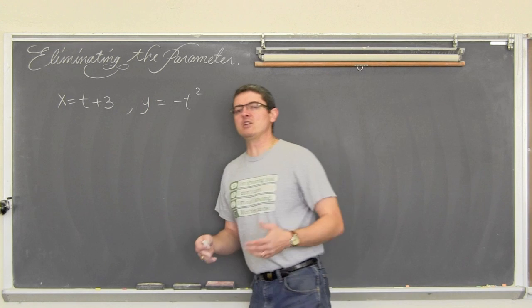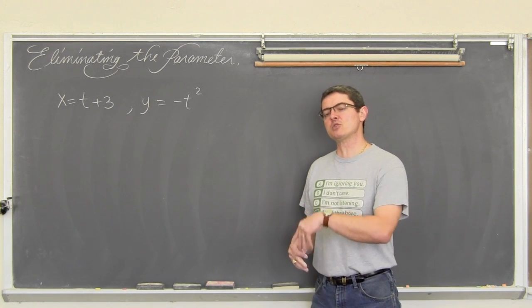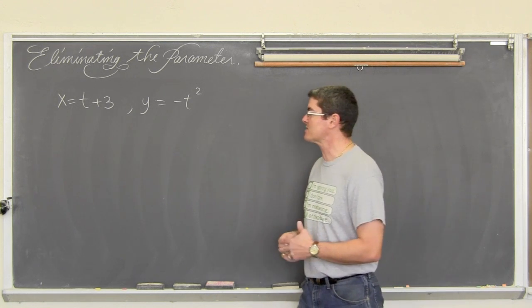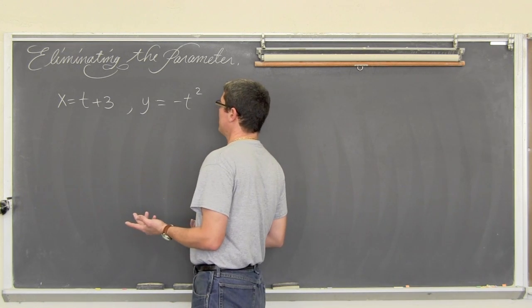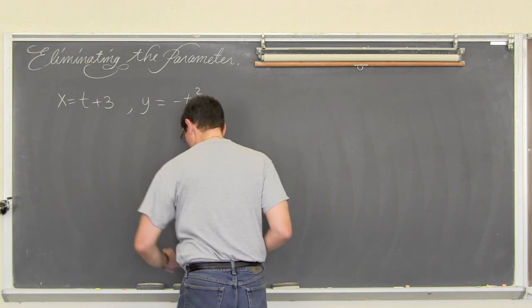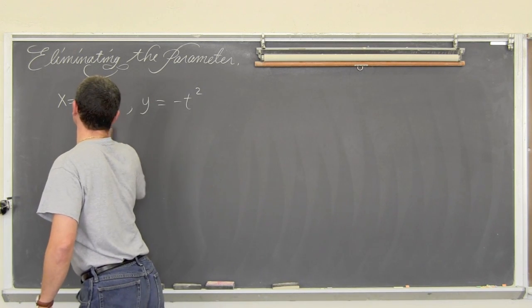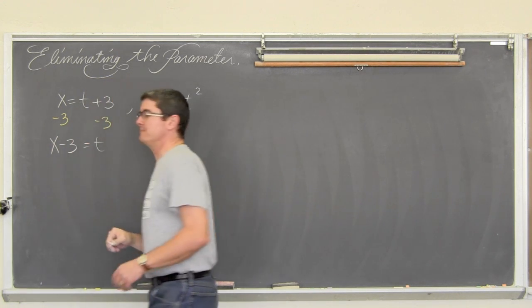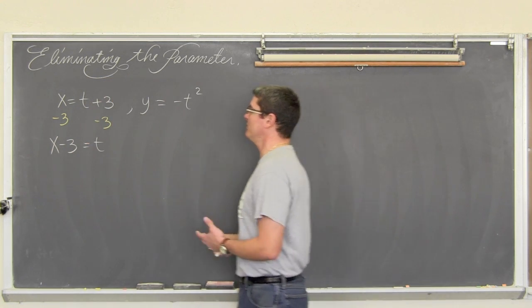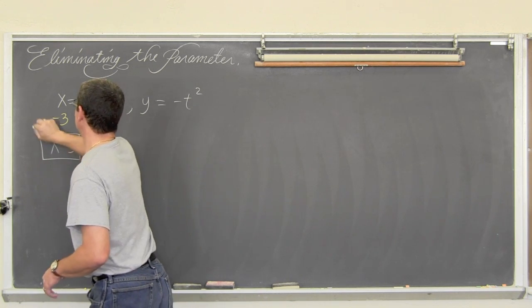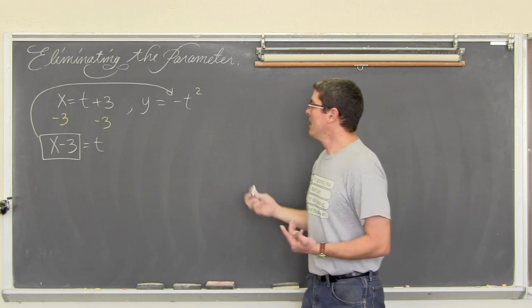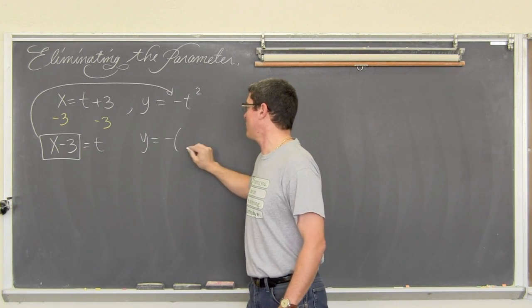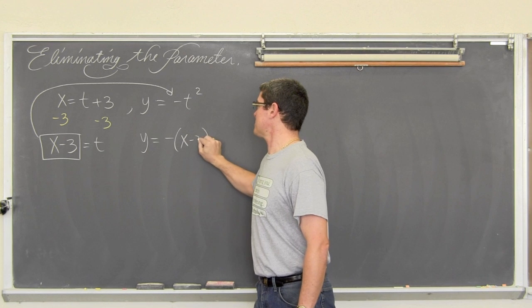Well this is just basic algebra. I don't have any trig functions. So I am going to do substitution to get rid of the parameter t and do it the way that I end up with y in terms of x. So we are going to take this equation. We are going to subtract both sides by 3 and get x minus 3 equals t. Now that we know what t is equal to, we are going to take what it is equal to and plug it into the other equation. And get y is equal to negative parentheses x minus 3 squared.